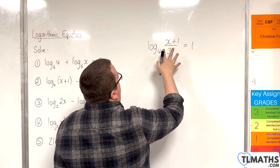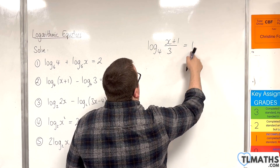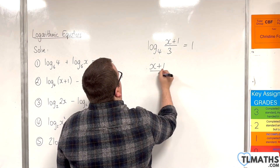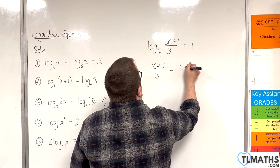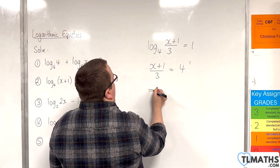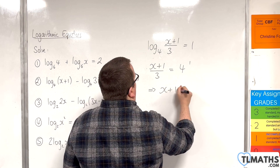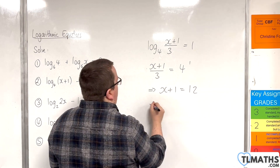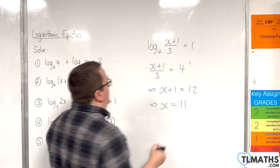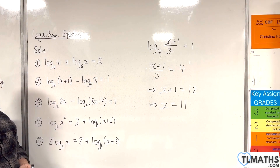Now convert from logarithmic form to exponential form. 4 to the power of 1 will be equal to (x plus 1) over 3. Multiply both sides by 3, so x plus 1 will be 12. Then subtract 1 from both sides, so x is equal to 11. That's our answer to number 2.